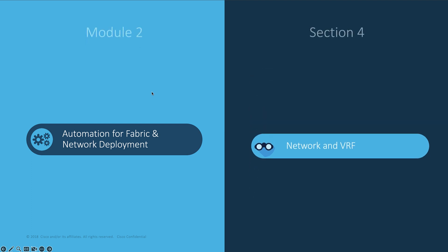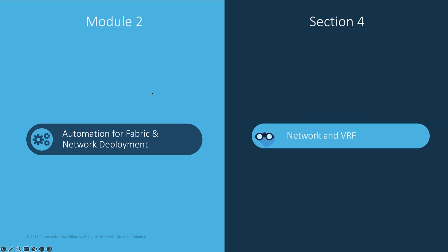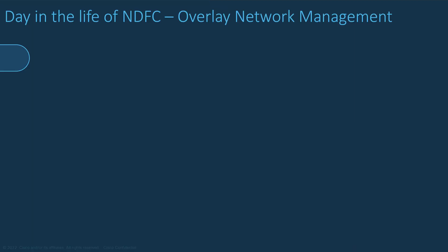With the Underlay Network deployed to interconnect LAN Classic and VXLAN EVPN Multisite, the next step is to create different Overlay Networks and VRF and attach them to the selected switches and interfaces.